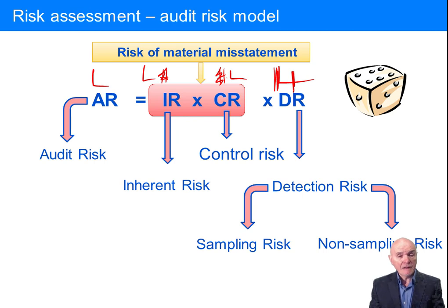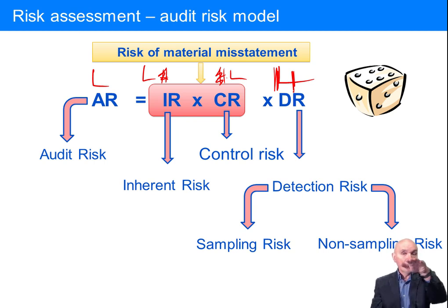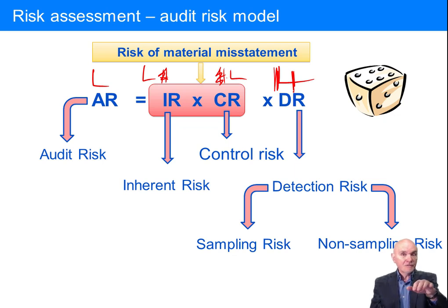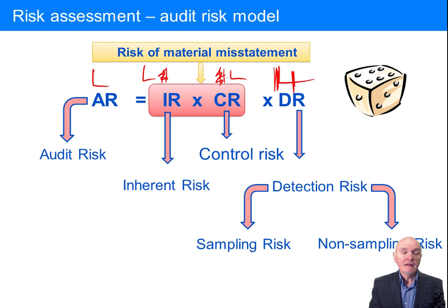So basically what the auditor is doing is adjusting the amount of work they do to match the sort of risk which they find in the client — the inherent risk and the control risk.